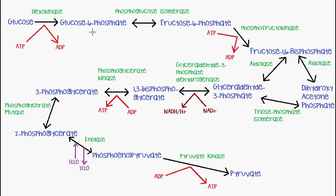Glucose-6-phosphate is then converted into fructose-6-phosphate. The enzyme that catalyzes this is phosphoglucose isomerase. No additional molecules are imported; the enzyme simply rearranges glucose-6-phosphate to form fructose-6-phosphate. This is a reversible reaction.